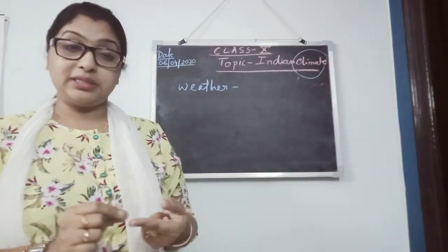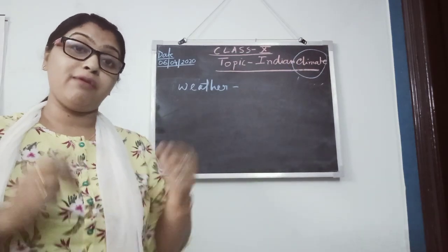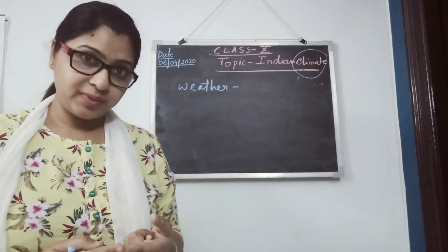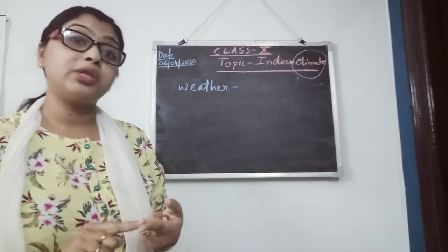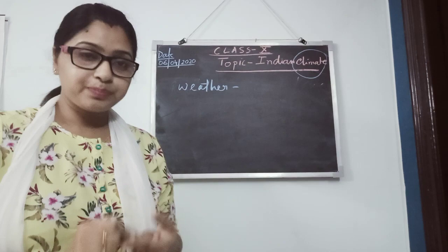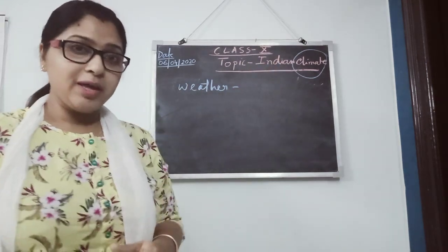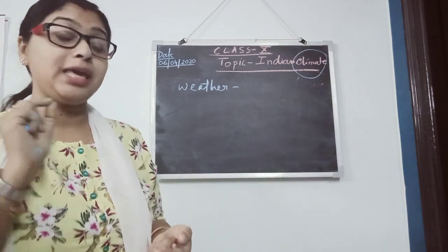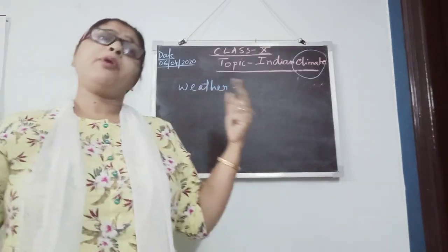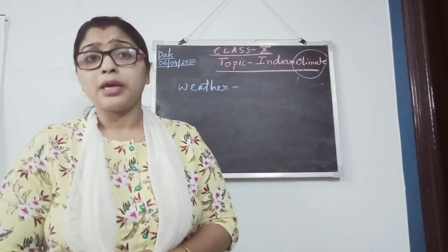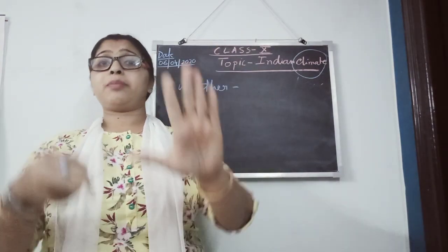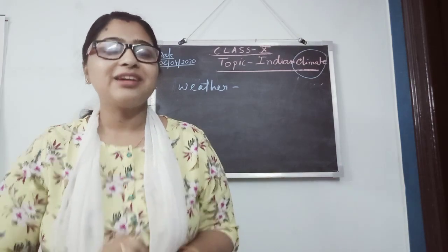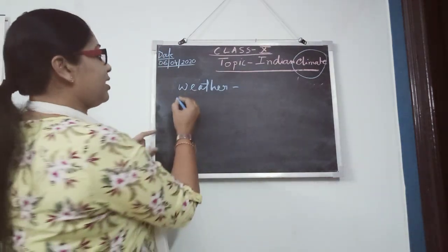The definition of climate: it is the sum total of weather conditions of a large area — it may be a continent, more than a continent, or a region — which has been experienced over more than 35 to 40 years. Indian climate means India also has this kind of climate experienced over more than 40 years. There are a number of climatic zones in the world: tundra, tropical, temperate, polar climates. India's climate is the tropical monsoonal climate.